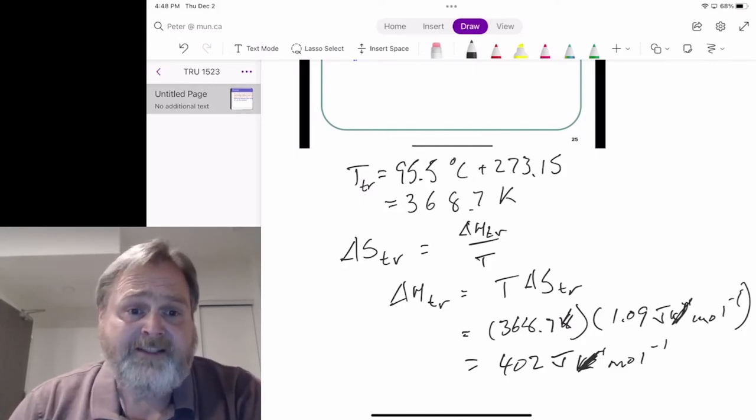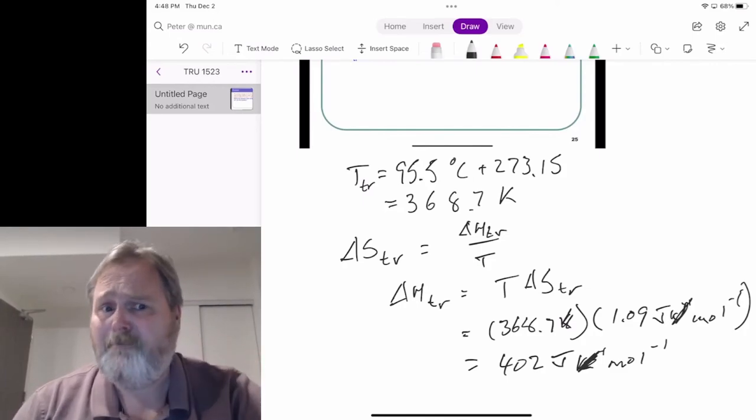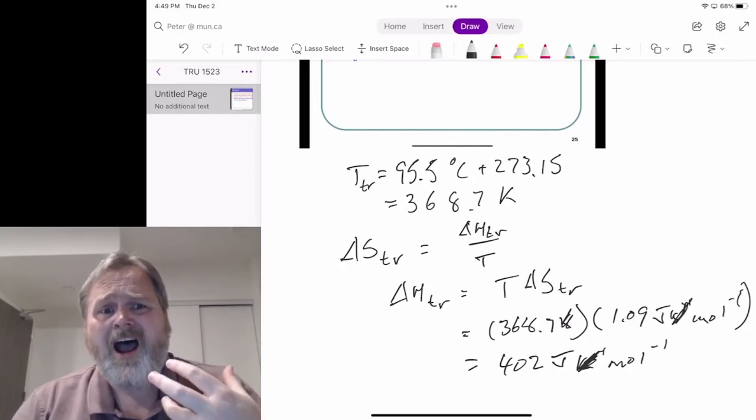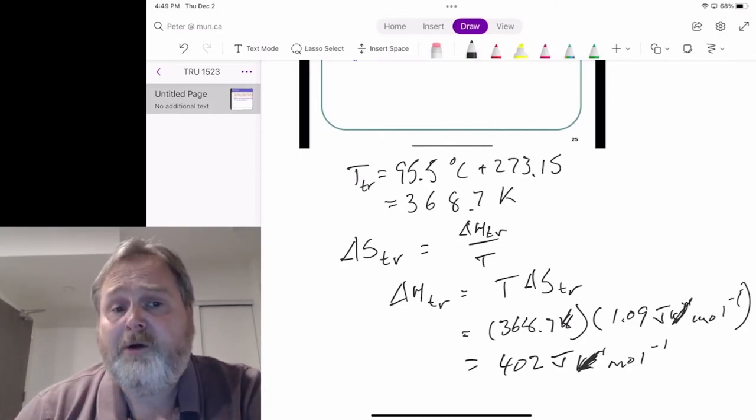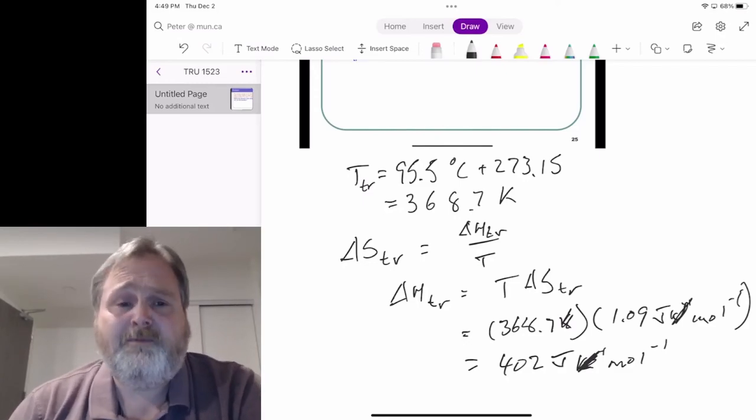Well, every other enthalpy change we've seen to this point have been for things like combustion reactions. Or solution reactions. Hundreds to thousands of kilojoules per mole. This is joules per mole.